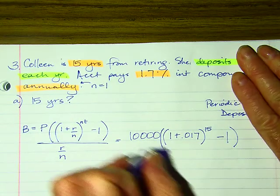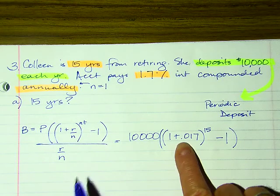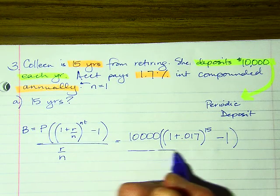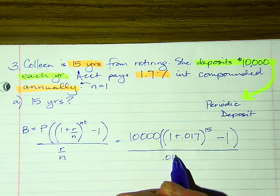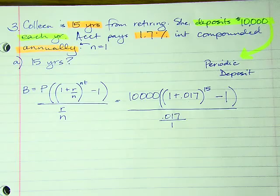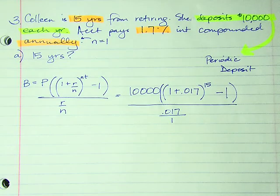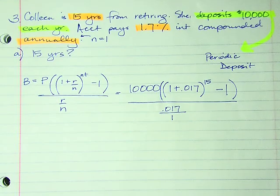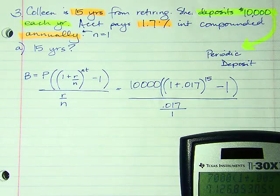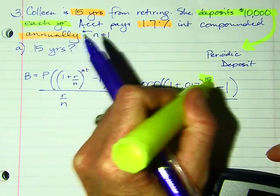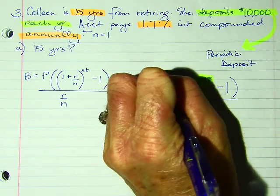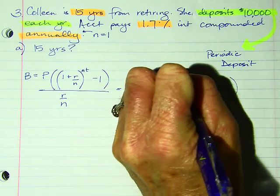We need to handle the parentheses first. Divided by the rate divided by n — and since n = 1, that's just 0.017. So the first thing I'm going to simplify is the numerator, and I'll enter that first.